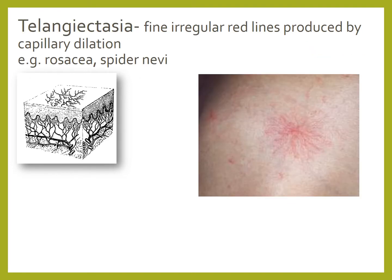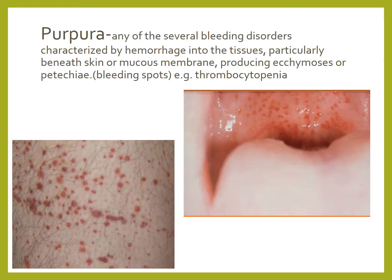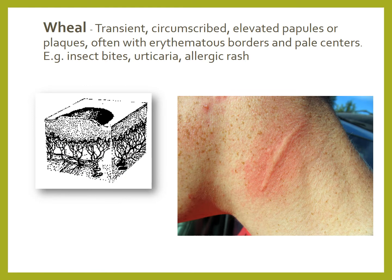Telangiectasias are fine, irregular red lines produced by capillary dilatation. Examples include rosacea or spider nevi. Purpura refers to bleeding disorders characterized by hemorrhage into the tissues — particularly beneath the skin or mucous membrane — producing ecchymosis or petechiae. Petechiae are smaller bleeding spots and ecchymosis are larger bleeding areas. An example is thrombocytopenia. A wheal is a transient, circumscribed, elevated papule or plaque, often with erythematous borders and a pale center, caused by an insect bite, urticaria, or allergic rash.